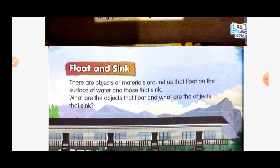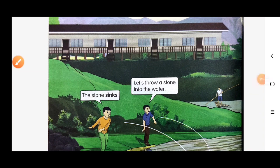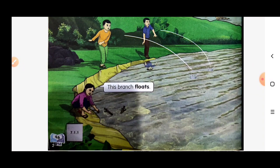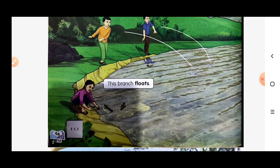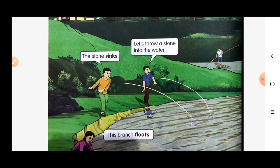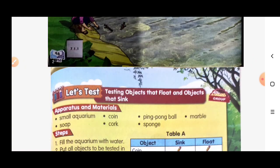There are objects that sink. What are the objects that float and what are the objects that sink? Let's throw a stone in the water — the stone sinks. This brown piece floats. In Malay, 'sink' means tenggelam and 'float' means terapung. Let's test objects that float and objects that sink.